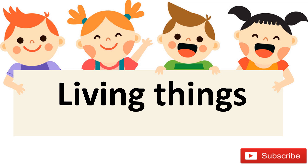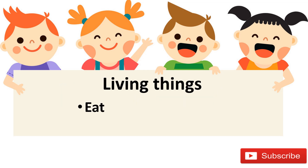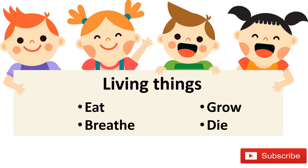First, we learned about living things — that living things are those who eat, breathe, grow, and die. Which means jo khana khate hain, saans lete hain, bade hote hain, and in the end mar jaate hain — wo sab living things kehlate hain.